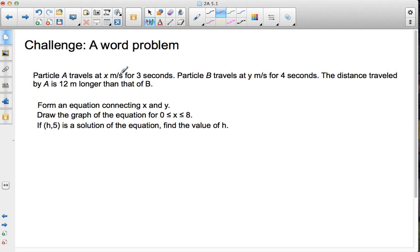Particle A travels at x meters per second for 3 seconds. Particle B travels at y meters per second for 4 seconds. The distance traveled by A is 12 meters longer than that of B. So first thing you want to do is form an equation connecting x and y. Then draw the graph of the equation for 0 is less than or equal to x is less than or equal to 8.